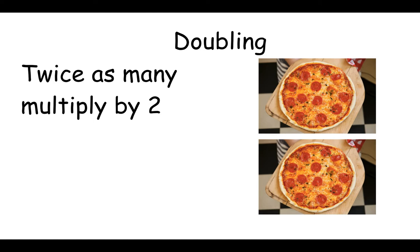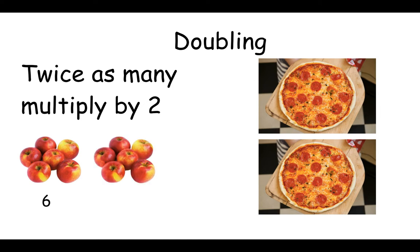Again, we can double amounts or numbers. Here are six apples. If I'm going to double six, if I want twice as many, I'll need another six apples. So double six would mean six times two, which makes twelve. So remember, when we're halving, we're dividing by two. And when we're doubling, we're multiplying by two. We want twice as many.